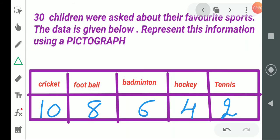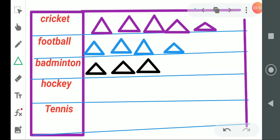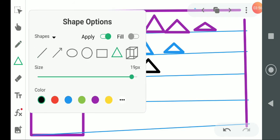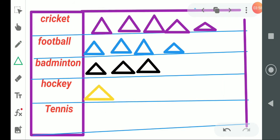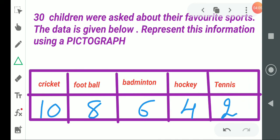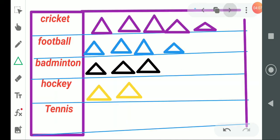Now come to hockey. Hockey is liked by four children. So again we change the color. This is four children, two plus two four children, right?